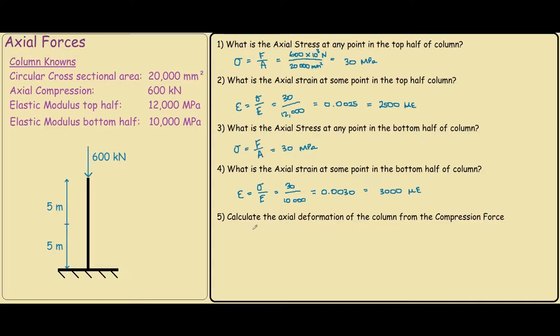So our last question, question 5, asks us to calculate the axial deformation of the column from the compressive force. So the axial deformation is another way of asking us to find the axial shortening of the column. So we represent the axial shortening by delta or a triangle. So delta total equals the deformation on the top plus the deformation on the bottom.